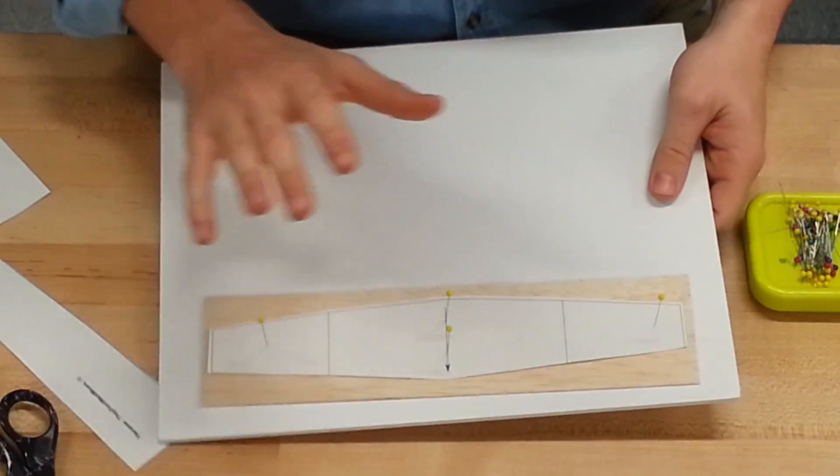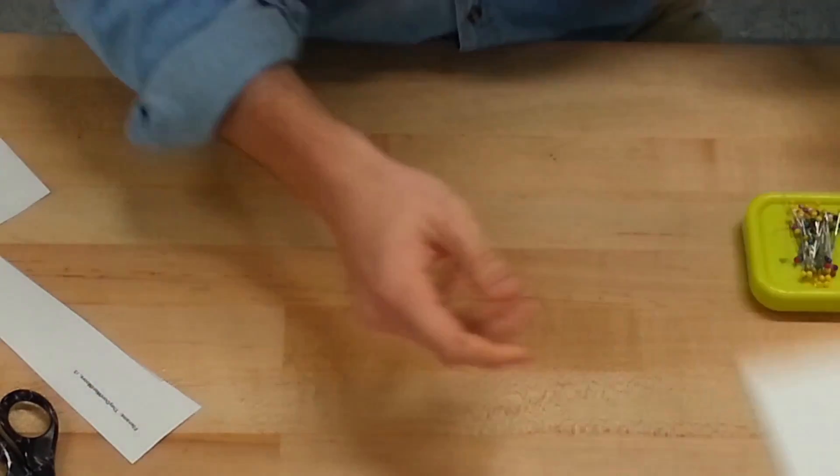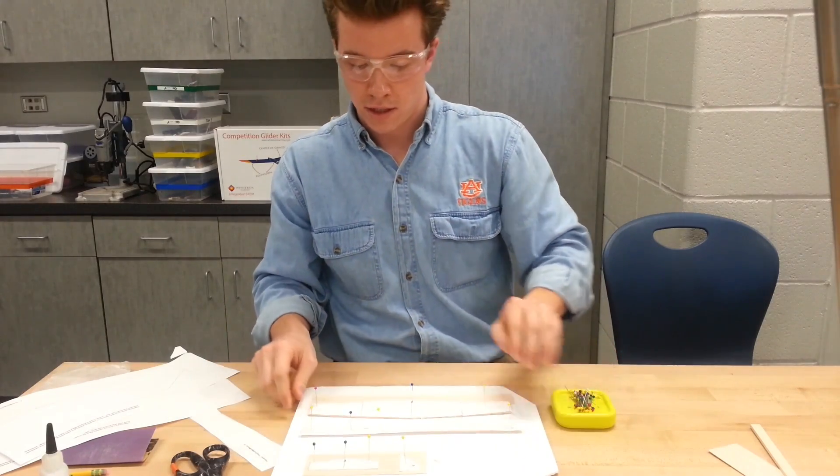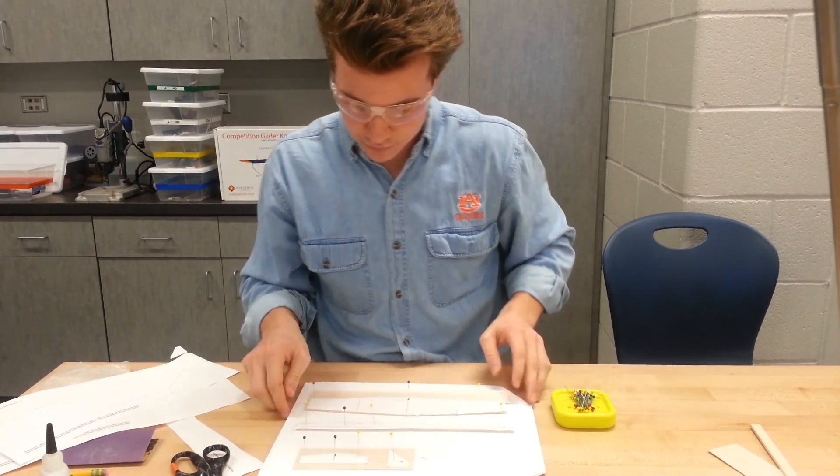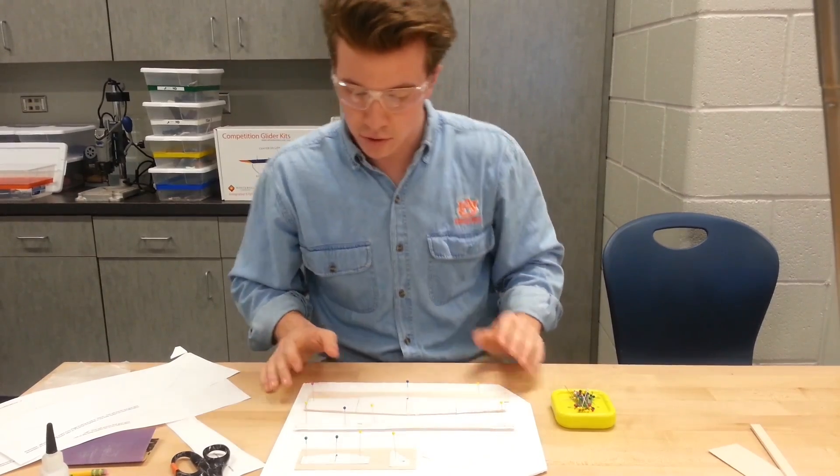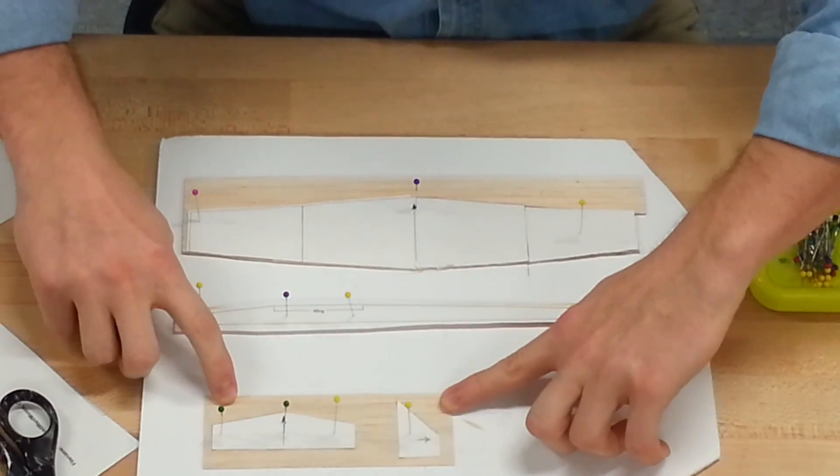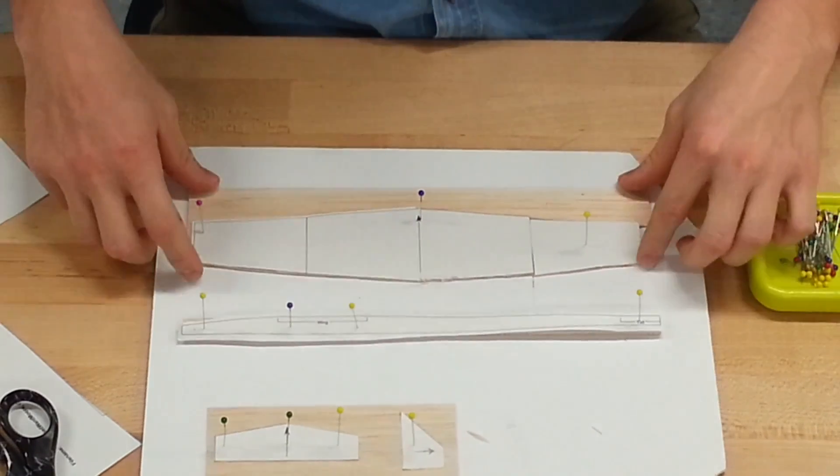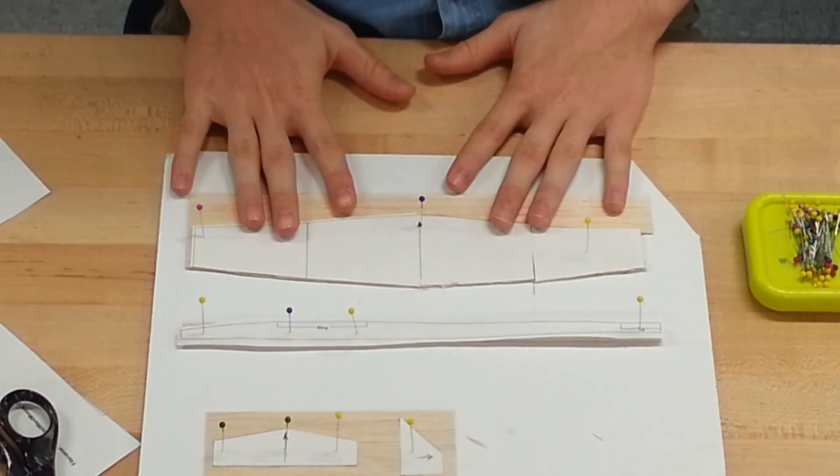I have all other pieces already pinned, so I'm going to put this board aside. And here's what I've got right now. You can see I have both stabilizers, vertical and horizontal, my fuselage and my wings ready and pinned on the wood.